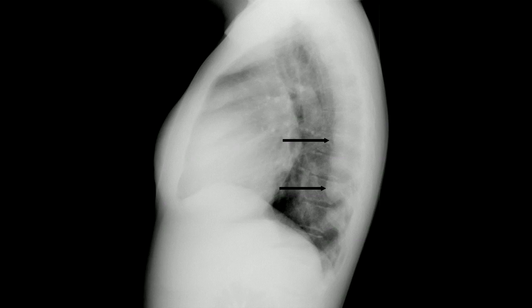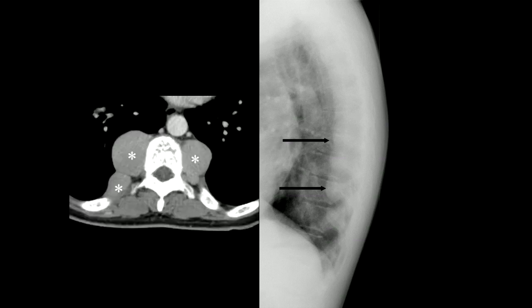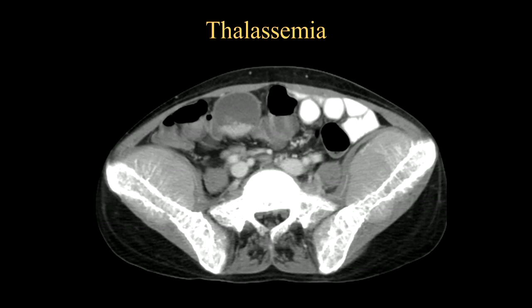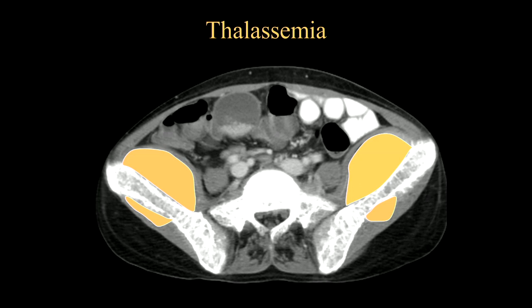The perivertebral masses are actually more obvious on the lateral view of the chest X-ray. On CT scan, you can appreciate why — there are lobulated soft tissue masses very classically around the thoracic spine, but they can also occur anywhere in the body, including the presacral space. You can also have enlargement of your liver and spleen. In another patient with thalassemia, you can see red marrow extramedullary hematopoiesis coming through the iliac bones — a classic hair-on-end appearance, but happening in the iliac regions rather than the skull.